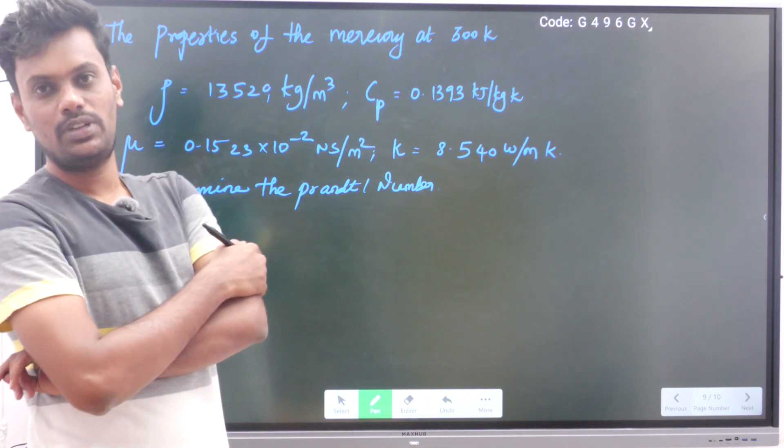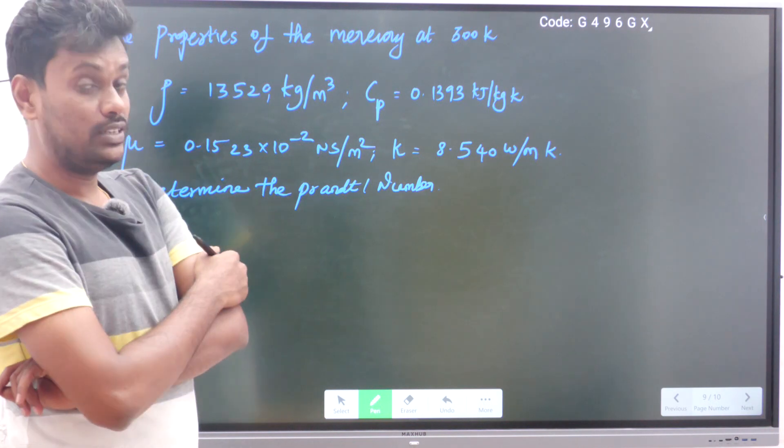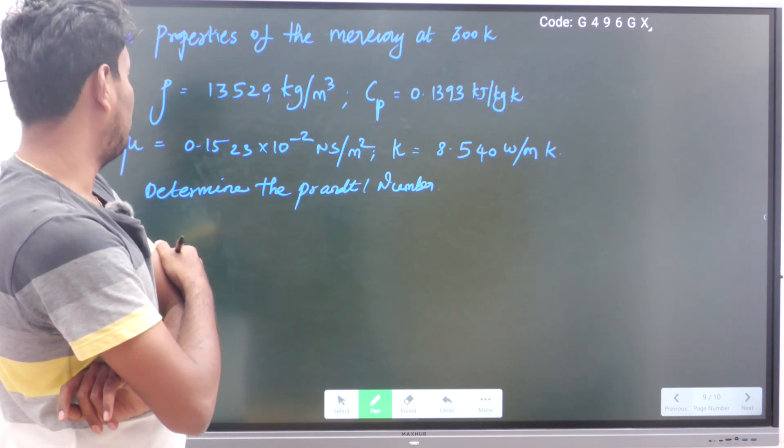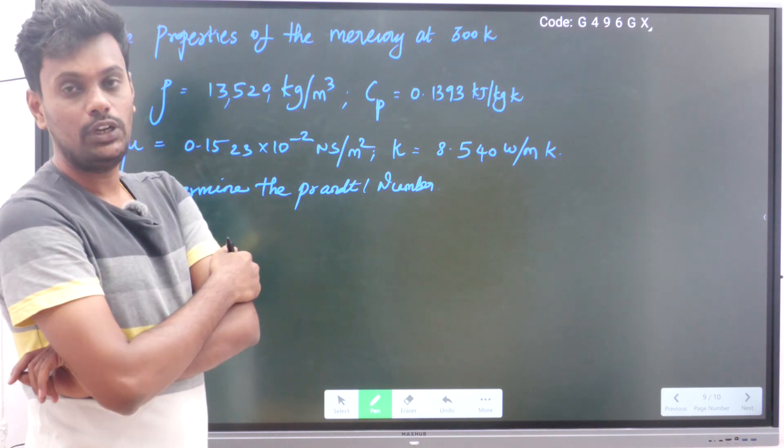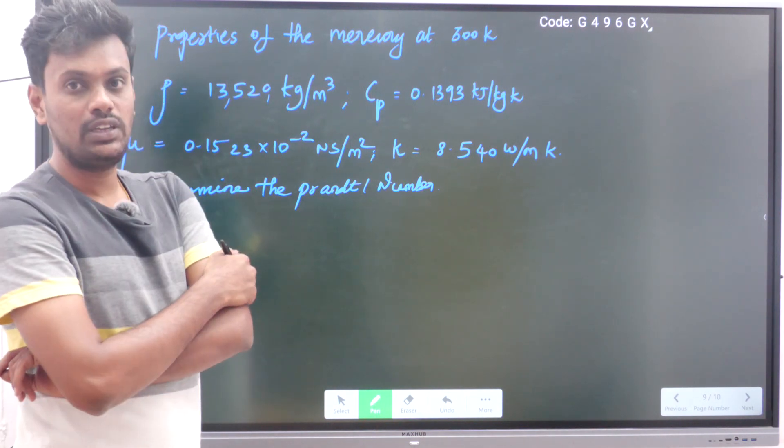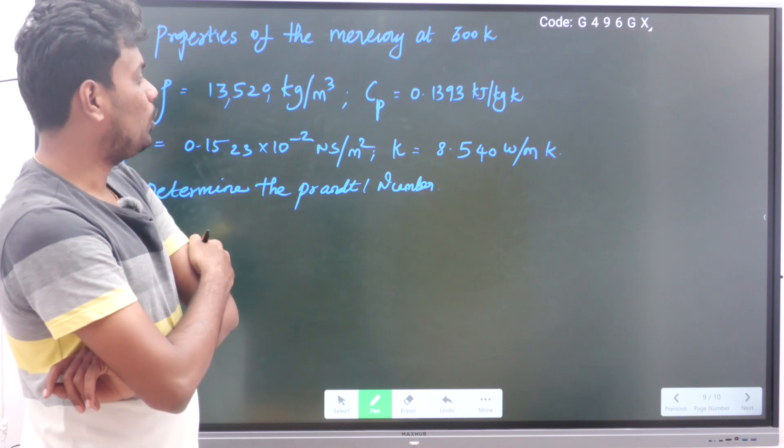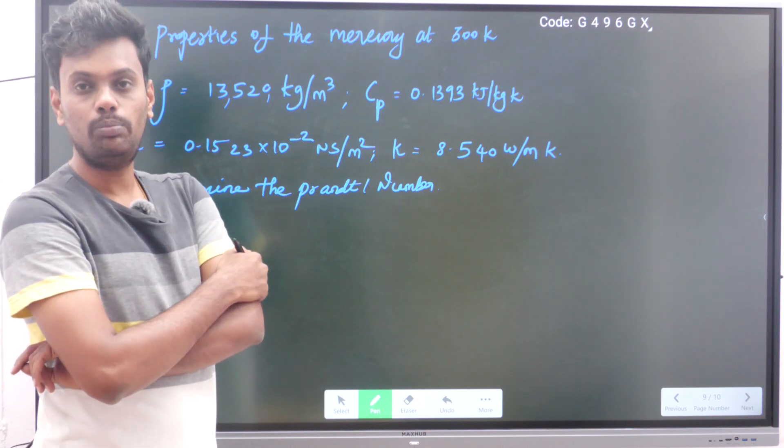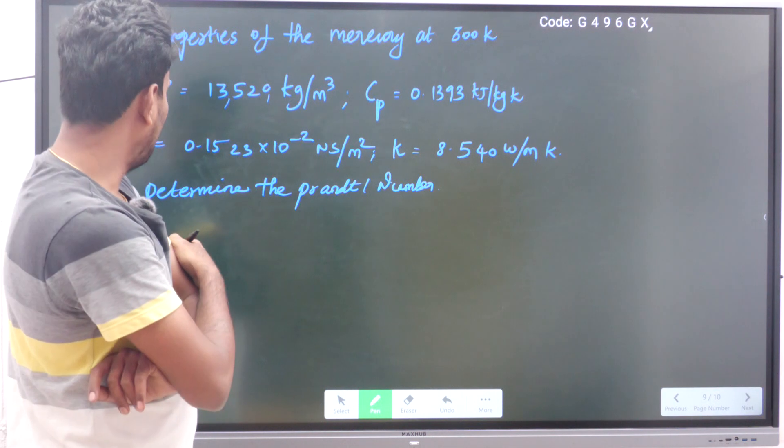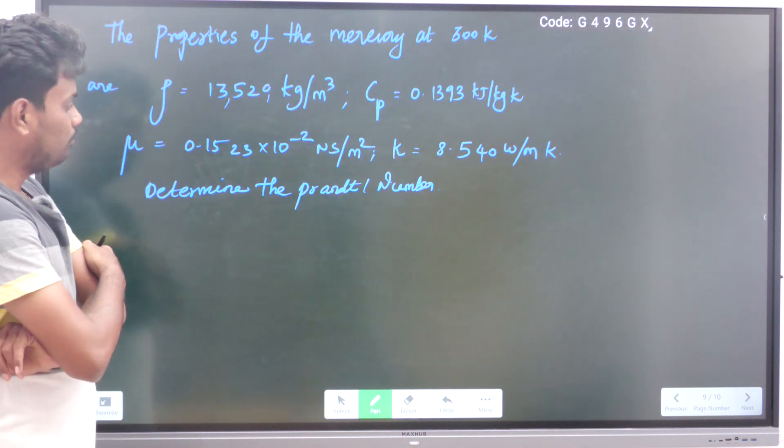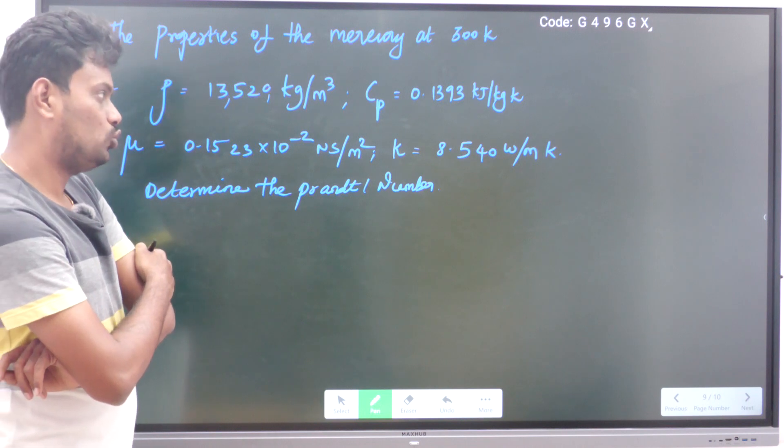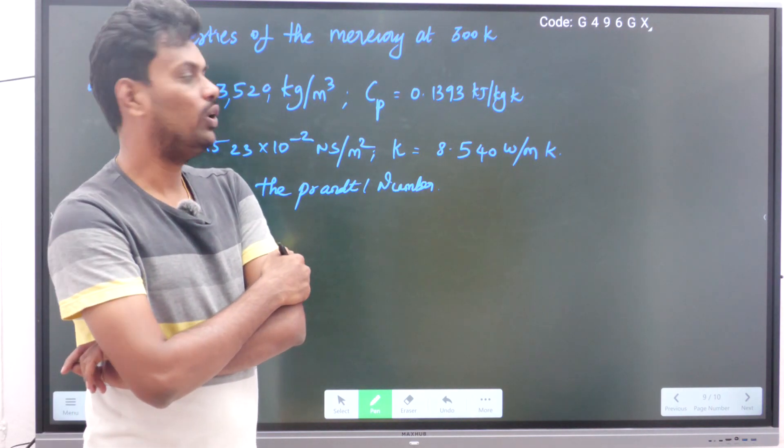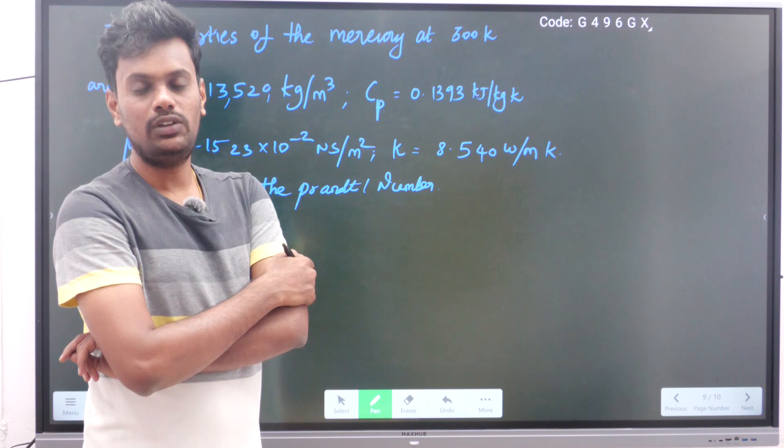They have given the properties of mercury: density rho equals 13,529 kg/m³, cp (specific heat of mercury) equals 0.1393 kJ/kg·K, mu (dynamic viscosity) is given as 0.1523 × 10⁻² N·s/m².